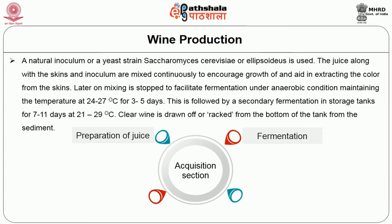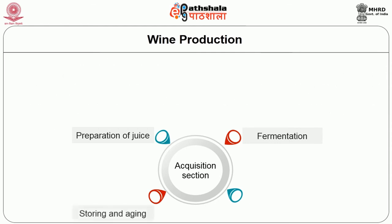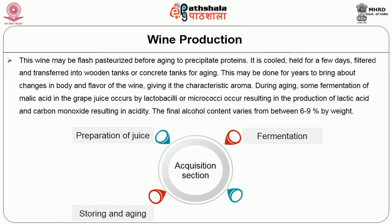Mixing is stopped to facilitate fermentation under anaerobic conditions, maintaining temperature at 24 to 27 degrees centigrade for 3 to 5 days. This is followed by secondary fermentation in storage tanks for 7 to 11 days at 21 to 29 degrees centigrade. Clear wine is drawn off or racked from the bottom of the tank away from the sediment. The third step is storing and aging: the wine may be flash pasteurized before aging to precipitate proteins. It is cooled, held for a few days, filtered and transferred into wooden or concrete tanks for aging, which may be done for years to bring about changes in body and flavour, giving it a characteristic aroma. During aging, some fermentation of malic acid occurs by lactobacilli or micrococci, resulting in the production of lactic acid and carbon dioxide, which may affect acidity. The final alcohol content varies from 6 to 9% by weight.